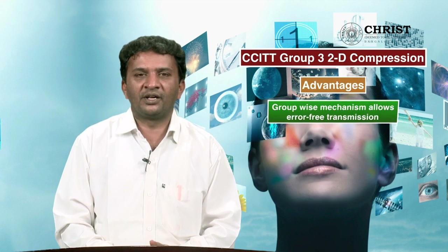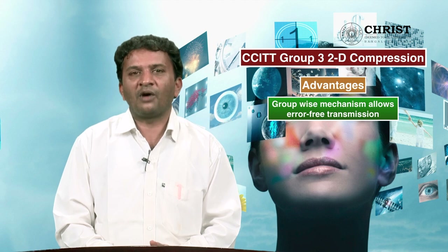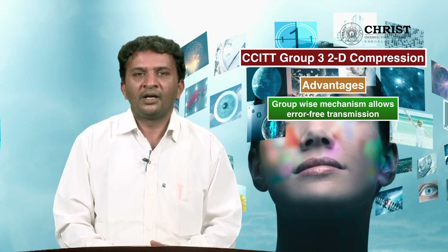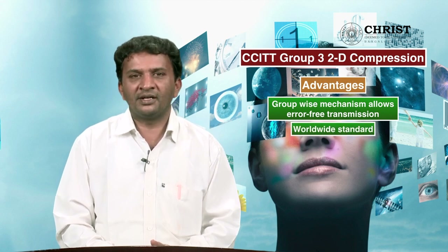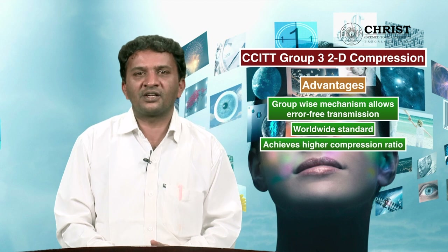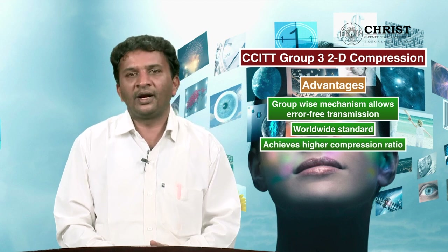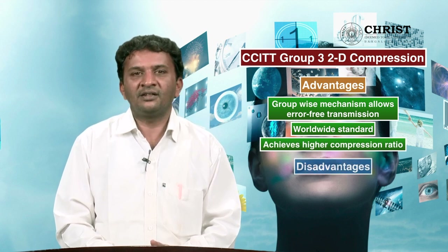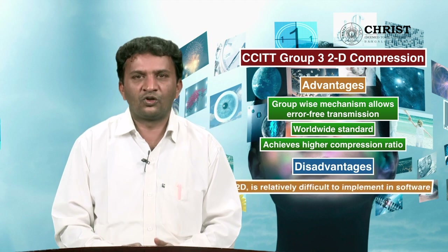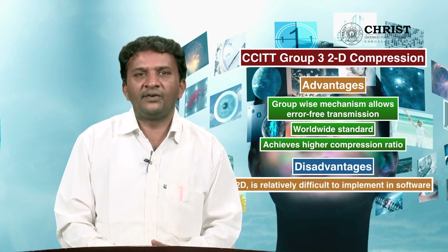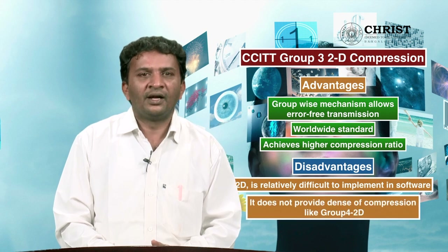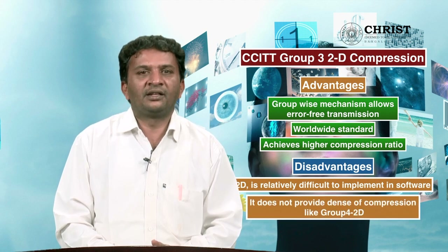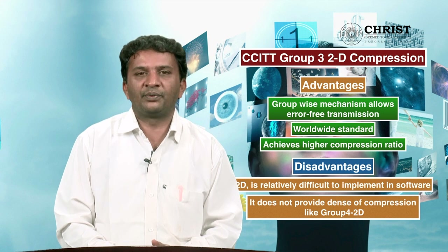Advantages of CCITT Group 3 2D: the group-wise mechanism allows error-free transmission between groups, it is a worldwide standard for facsimile and document images, and it achieves a higher compression ratio compared to the 1D scheme. Disadvantages: unlike Group 4 2D, it is relatively difficult to implement in software, and it does not provide as dense compression as Group 4 2D compression.